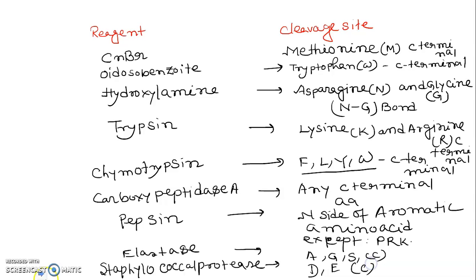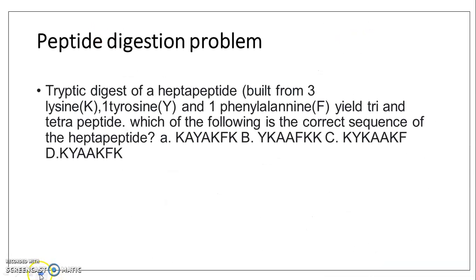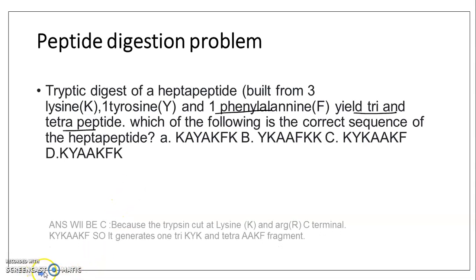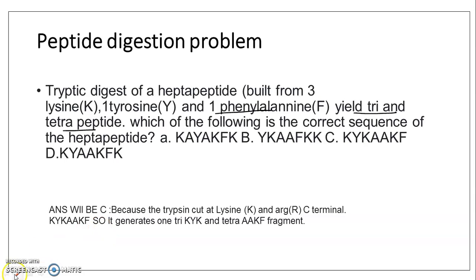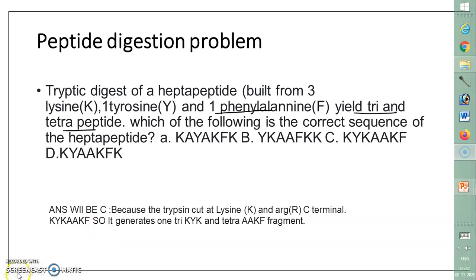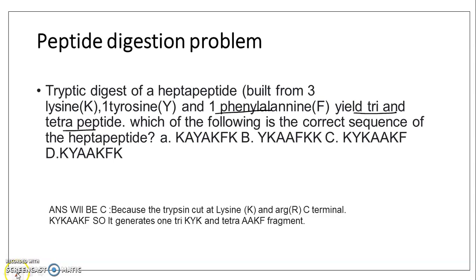Now we will see how to solve a problem. A trypsin-digested heptapeptide built from three lysines, one tyrosine, and one phenylalanine yields a tripeptide and a tetrapeptide. Which of the following is the correct sequence of the heptapeptide? We know that trypsin cuts at lysine and arginine C-terminal.